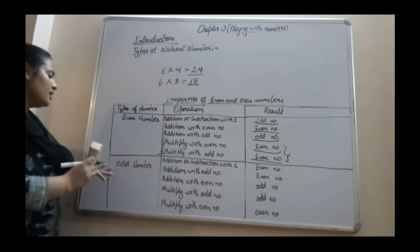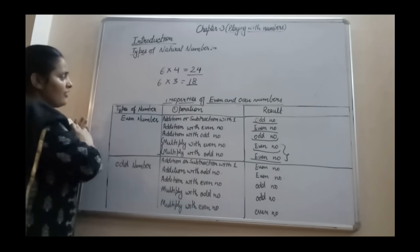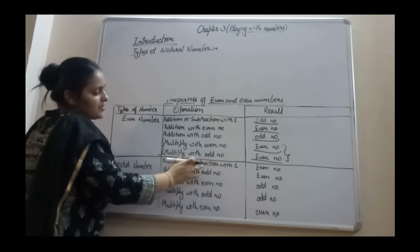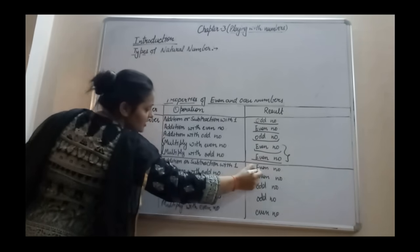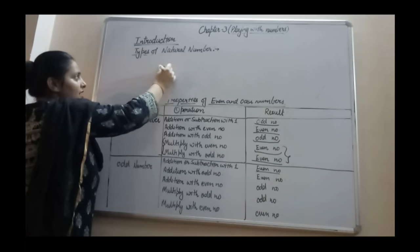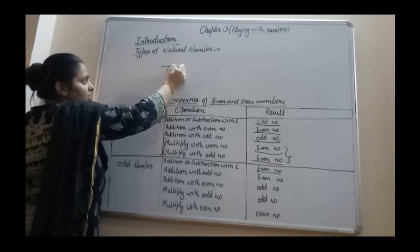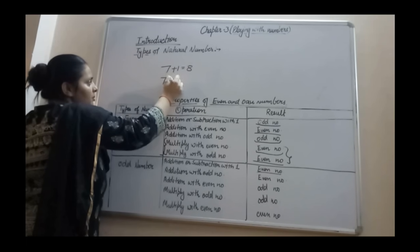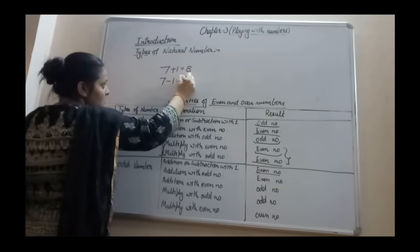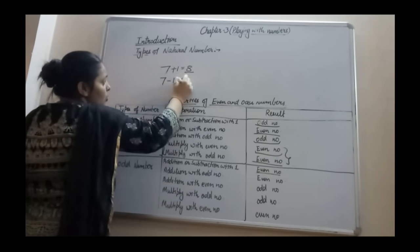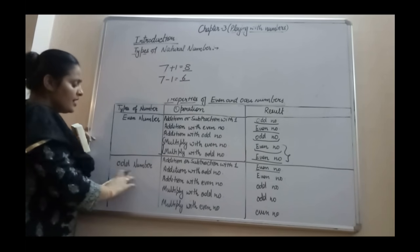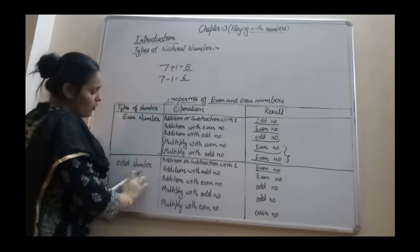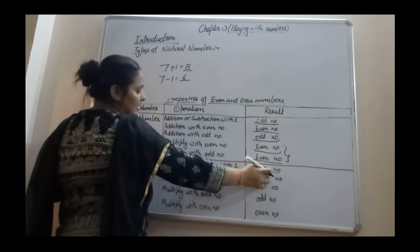Now for odd numbers: whenever you add or subtract 1 from an odd number, your answer is an even number. For example, 7 is an odd number. Add 1 to get 8, or subtract 1 to get 6. Both are even numbers. So addition or subtraction of 1 from an odd number results in an even number.